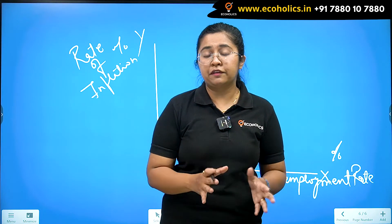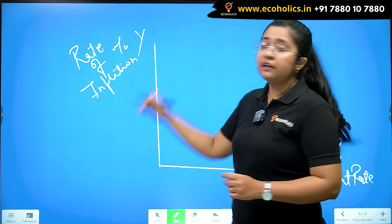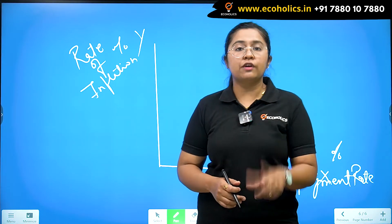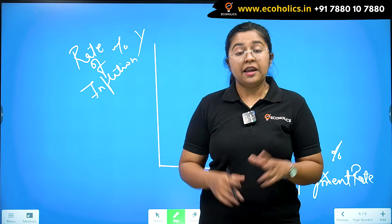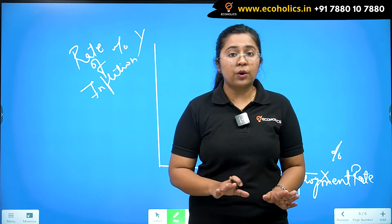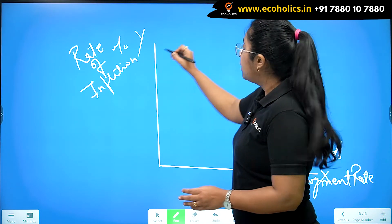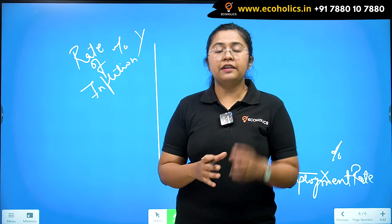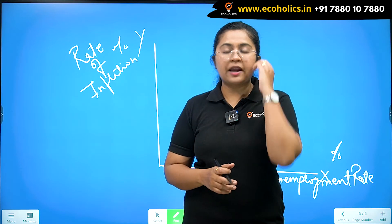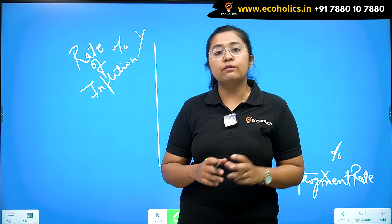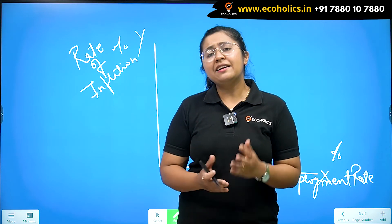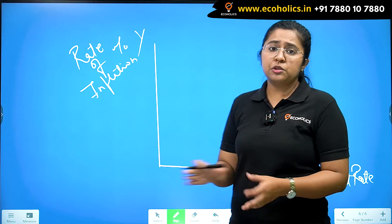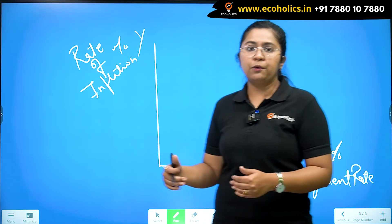According to the first initial concept of the Phillips curve, the rate of inflation and the rate of unemployment have an inverse relationship. Why did A.W. Phillips say there is an inverse relationship between rate of inflation and rate of unemployment? Let me elucidate the concept before drawing the curve.